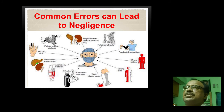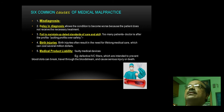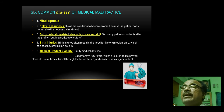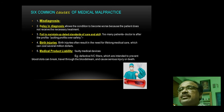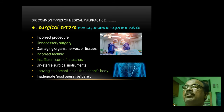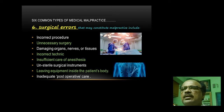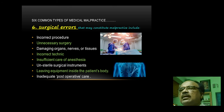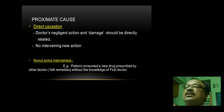Common errors that can lead to negligence include six categories: misdiagnosis, delay in diagnosis, failure to maintain updated standards of knowledge and skill, birth injuries, medical product liabilities, and faulty equipment. Surgical errors include: incorrect procedure, unnecessary surgery, damaging organs or nerves, incorrect technique, insufficient care in anesthesia, unsterile surgical equipment, leaving something in the abdomen, and inadequate post-operative care. All these are common errors of medical practice.